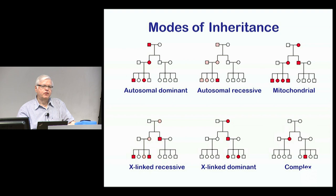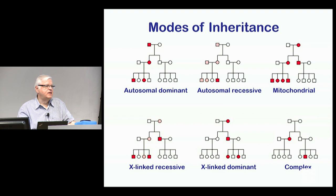As opposed to recessive inheritance, where it takes two bad copies of the gene — two different mutations or two copies of the same mutation — with no normal copy of the gene to cause the phenotype. One quarter of children will receive the bad copy from both parents and will show the phenotype. Those are usually associated with loss of function mutations. One half of the children will receive one copy and won't typically show any phenotype for a classic recessive disease, but have a chance of generating affected kids if they mate with someone who also has a copy.